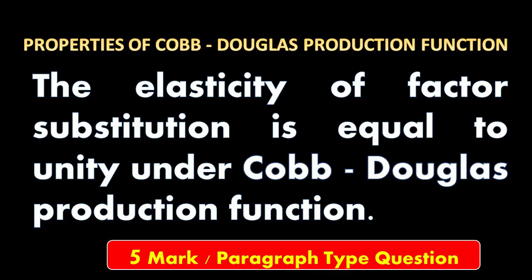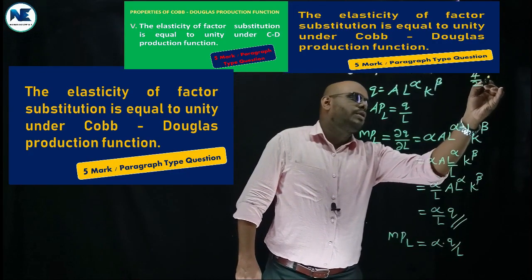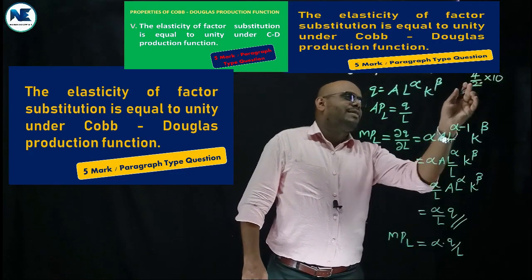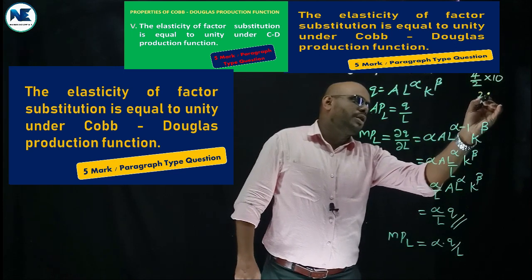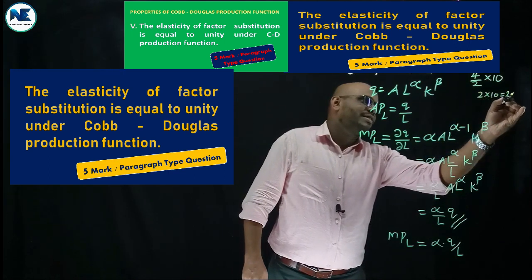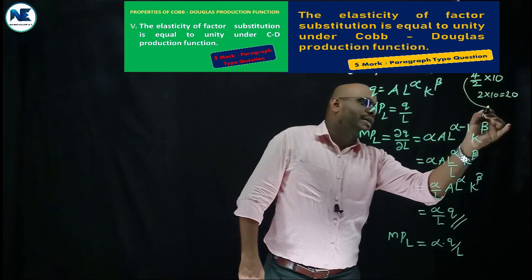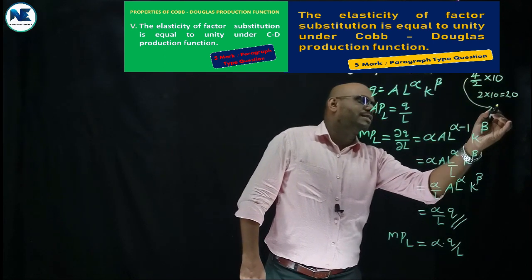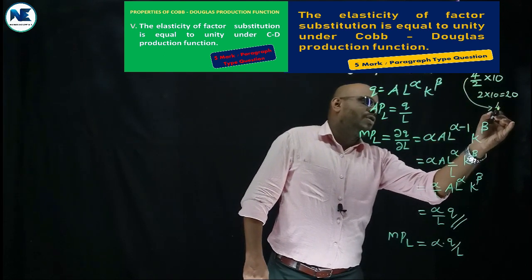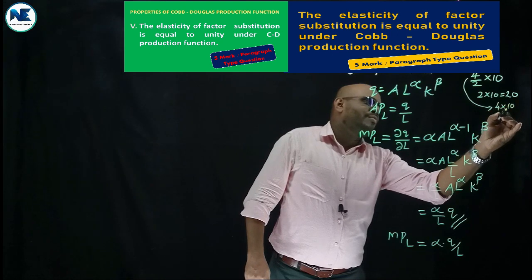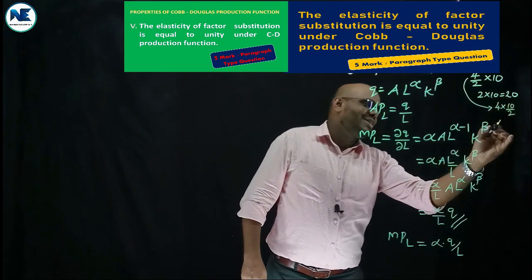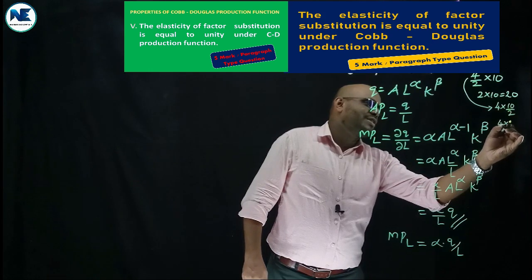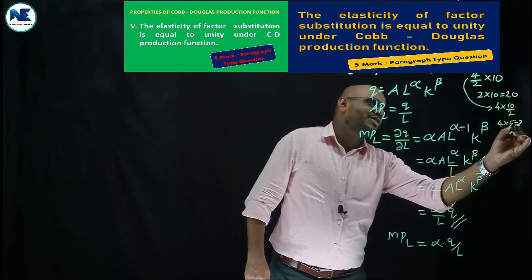To verify the rearrangement mathematically, consider a numerical example: (4/2) × 10 = 2 × 10 = 20. Rearranging it as (4 × 10)/2 = 40/2 = 20. The result is the same, confirming the algebraic rearrangement is valid.